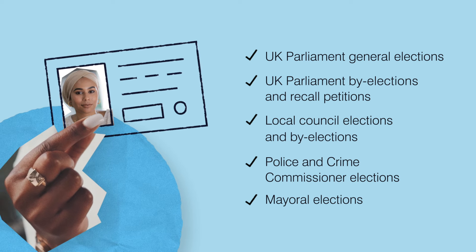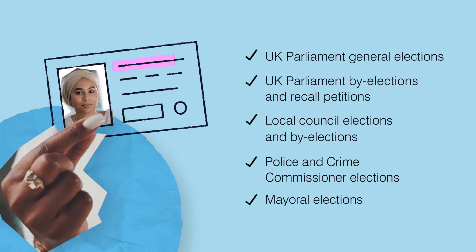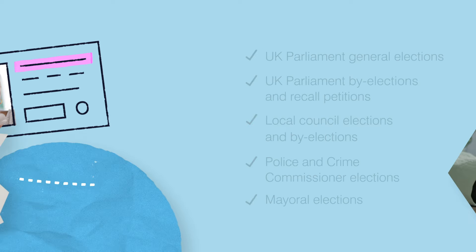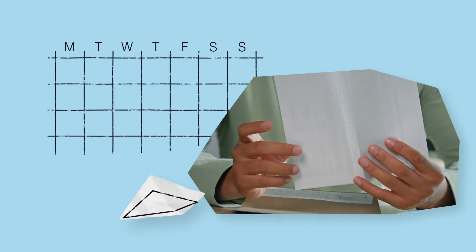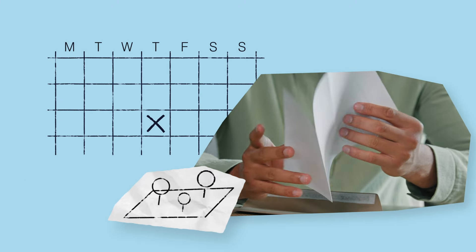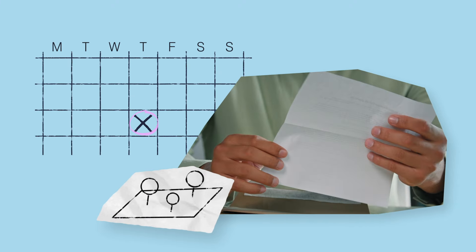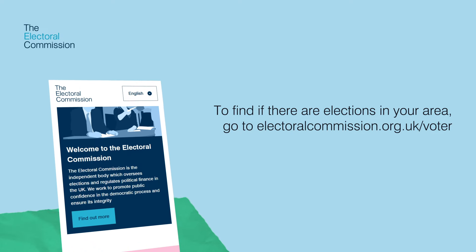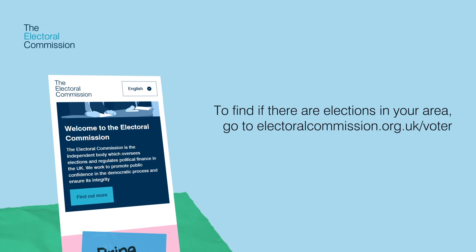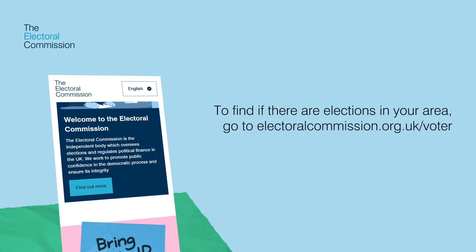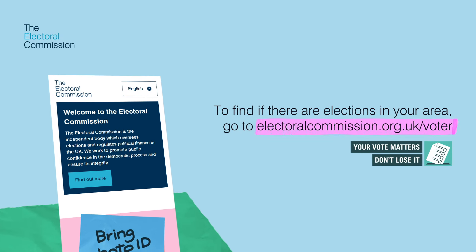The name on your photo ID should be the same as the name you use to register to vote. Elections can take place in different areas at different times of the year. To find out if there are elections happening in your area, go to electoralcommission.org.uk/voter.